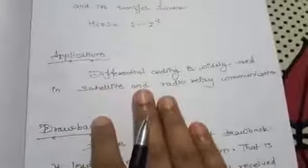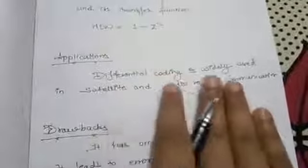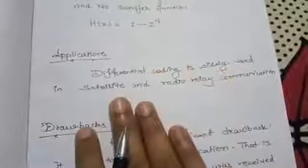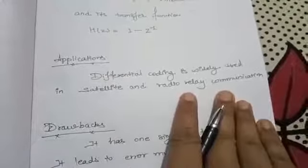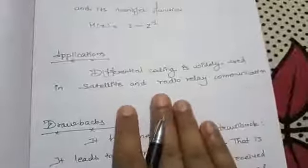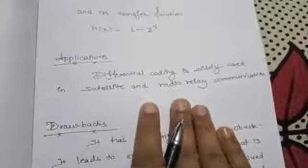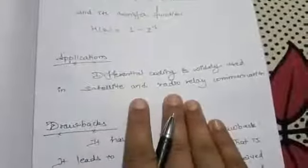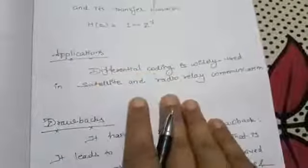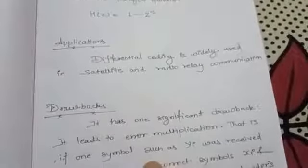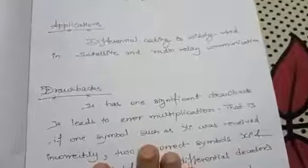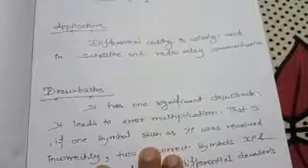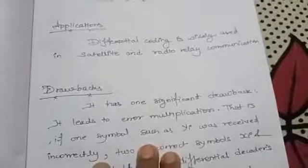The major applications of differential coding are in satellite communications and radio relay communications. Differential coding is widely used in satellite and radio relay communications.